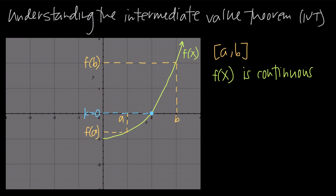The reason this is helpful is that we can use the Intermediate Value Theorem to prove that a function has a root or a solution inside of an interval — in other words, that the function equals 0 at some point inside the interval. Sometimes we don't know what the solution is, but we want to show that a solution exists inside the interval a to b, and the Intermediate Value Theorem allows us to do that.